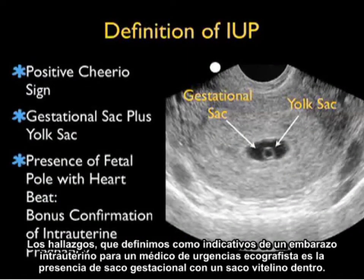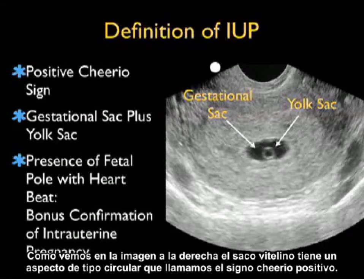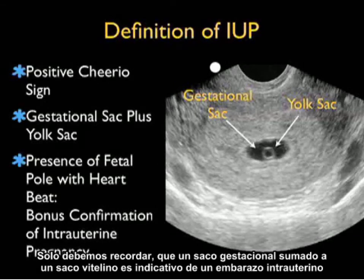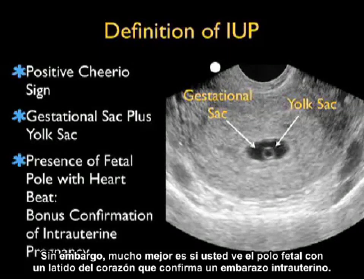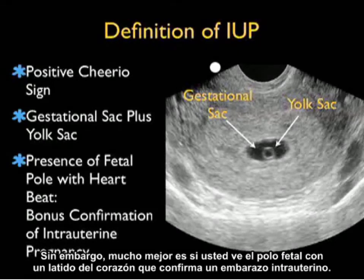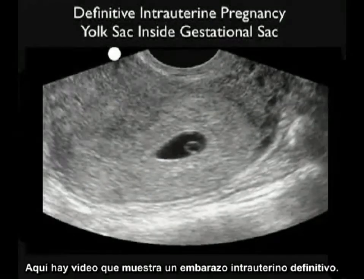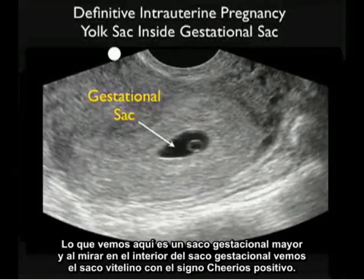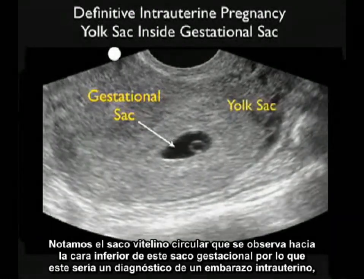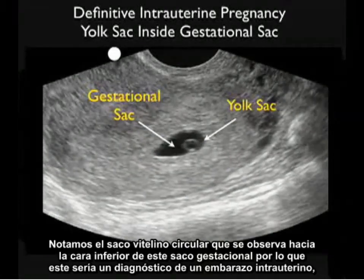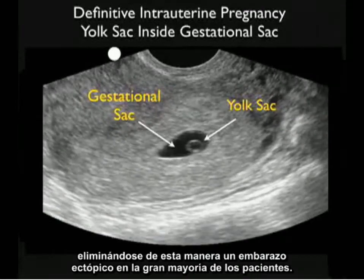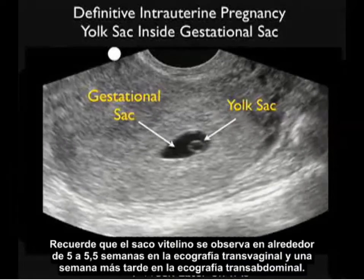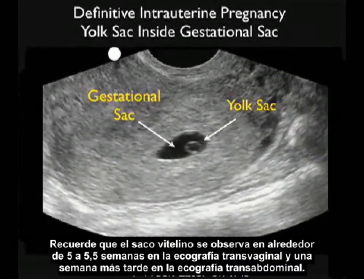The findings we define as indicative of an intrauterine pregnancy for an emergency physician sonographer are the presence of a gestational sac with a yolk sac inside. The yolk sac has a circular appearance we call the positive cheerio sign. So: gestational sac plus yolk sac is indicative of intrauterine pregnancy. Bonus points are given if you also see a fetal pole with a heartbeat. Here's a video clip showing a definitive intrauterine pregnancy — a larger gestational sac with the positive yolk sac or cheerio sign visible, effectively ruling out ectopic pregnancy in the vast majority of patients. The yolk sac is seen at about 5 to 5.5 weeks on transvaginal sonography and about a week later transabdominally.